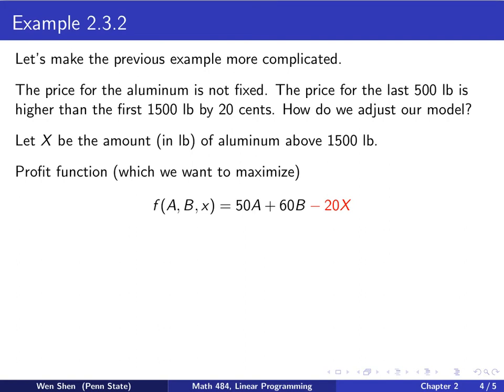What we can do is let's try to introduce a new variable. We call it capital X. This will be the amount in pounds of the aluminum we will use above this 1500 pounds. When that is introduced, then we have to adjust our profit function. So in the profit function, we'll have an additional term. If you are using more than 1500 pounds of aluminum by this amount of X, this will give you a reduction in your profit function, that's minus 20 times X. Here we highlight the difference in color red to catch your attention.